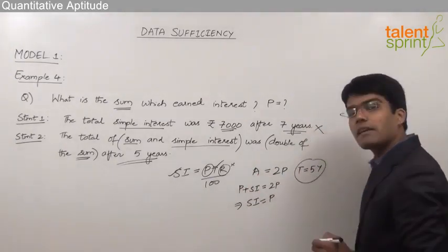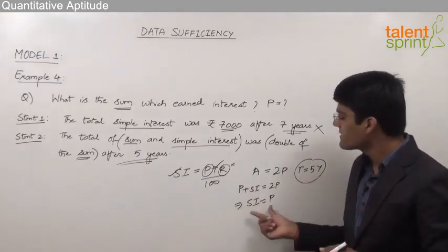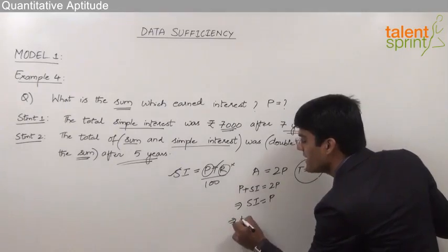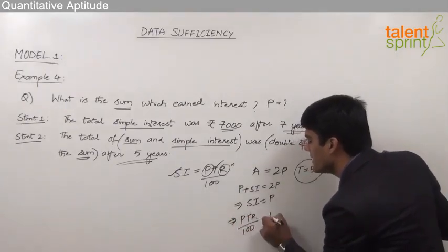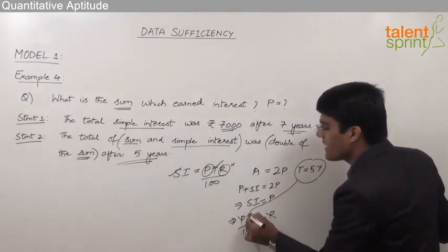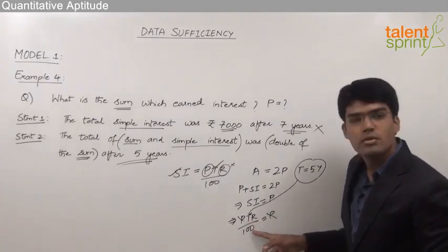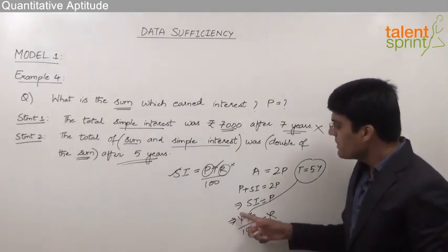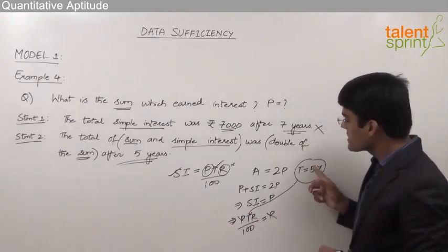From Statement 2, after a time period of 5 years, simple interest equals P. Using the formula SI = PTR/100, we substitute: P × 5 × R / 100 = P. P cancels on both sides, and with T = 5 years, we can solve for R. Substituting T = 5, we get R = 100/T, so R = 100/5 = 20% per annum.